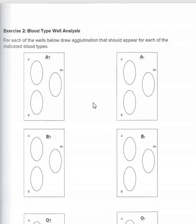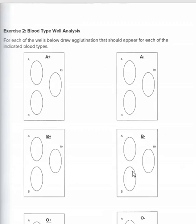For the online lab, you'll draw which samples show clumped blood. For A positive: the A would clump and the RH factor would clump because it's positive, but the B would not clump. For B negative: the B would clump, the A would not clump, and because it's negative, the RH would not clump either — so only the B clumps.